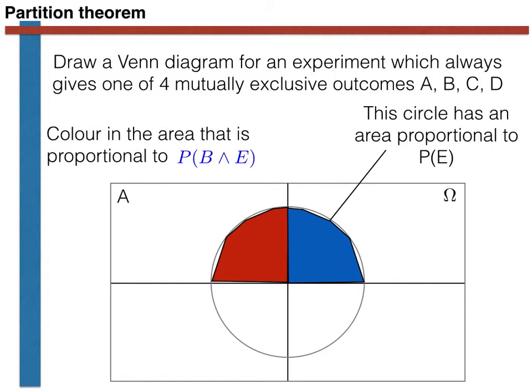You should have coloured as shown here. Now do the probability that C and E happen simultaneously in green. You should now have something like this. Let's finish by doing the probability that D and E happen simultaneously in purple. And here is our final diagram.